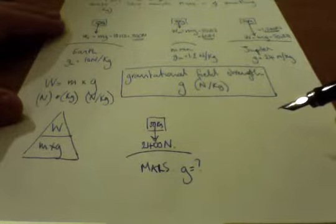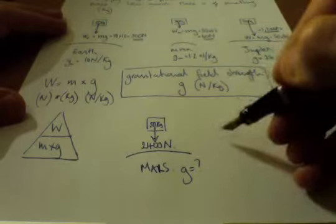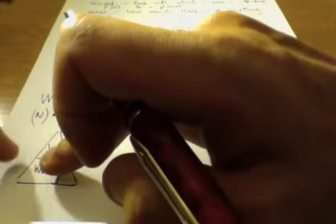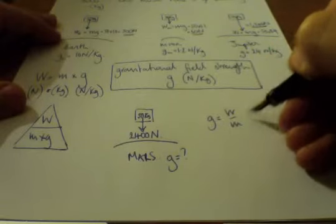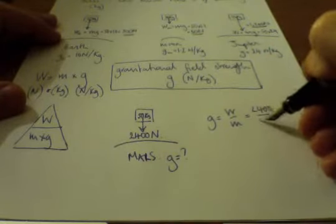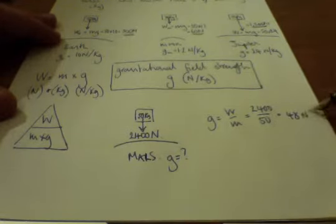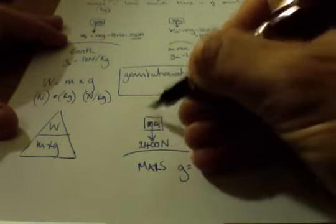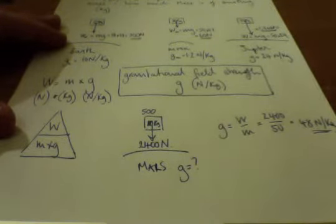Okay then, so what do we have? If you had followed this through accurately, you would cover up g, and that leaves us with weight divided by mass, which gives us 2,400 newtons divided by 50 kilograms, which gives us 48 newtons per kilogram. Actually, that's exceptionally large. It's larger than Jupiter. We know Mars isn't large enough. The problem was, I accidentally should have written that as 500 kilograms.